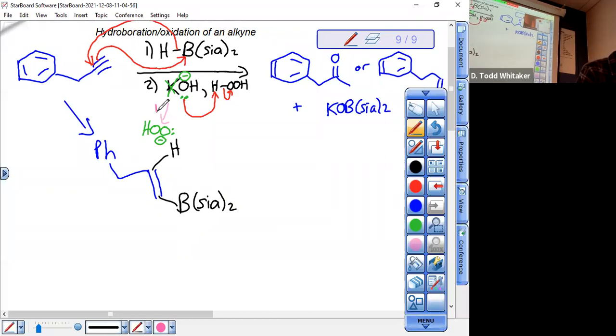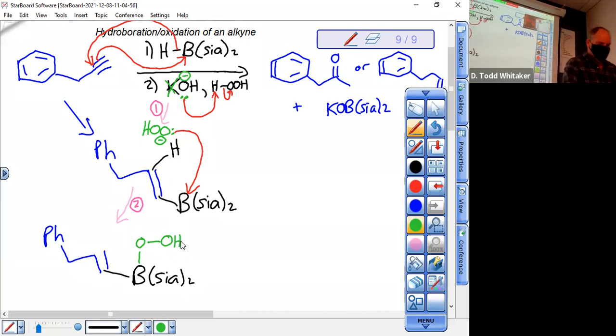That was step one. Step two, that O minus attacks B. There are three times you generate O minus. The first two, you attack the B. And so step two, we've attacked the B with the peroxide. Step two. And you're going to get phenyl, CH2, CCC. Don't need to draw the H. And you now have OOH up there. Please show the bond from O to O, because that has to break in the next step. That's step two.